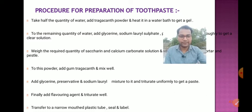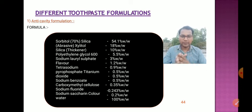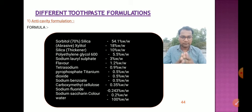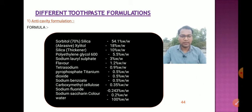Finally, add the flavoring agent and triturate well. Transfer to a narrow-mouth plastic tube, seal it, and label it. For an anti-cavity toothpaste formulation, the formula uses sorbitol, silica, xylitol, silica as thickener, polyethylene glycol 600, sodium lauryl sulfate, flavor, tetrasodium pyrophosphate, titanium dioxide, sodium benzoate, carboxymethyl cellulose, sodium fluoride, sodium saccharine, color, water, and preservative.